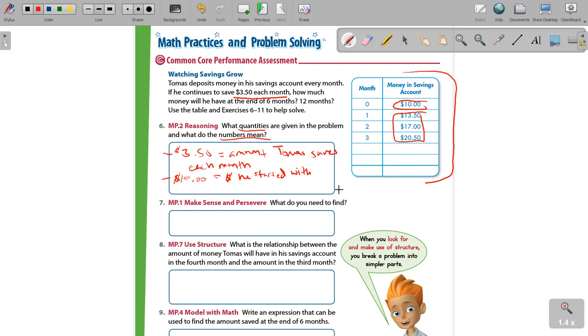Now, for this one, what do you need to find? What do you need to find to solve this problem here? They're actually asking you for two separate things. They want to know what he'll have at the end of six months and what he'll have at the end of 12 months.